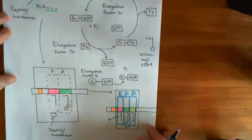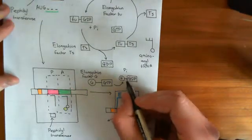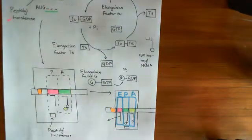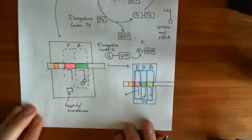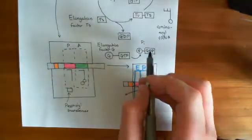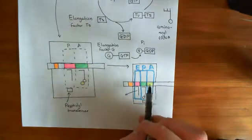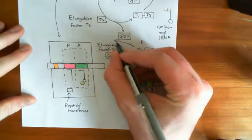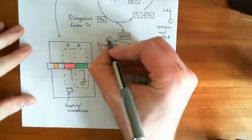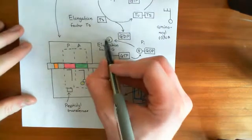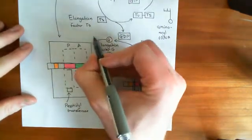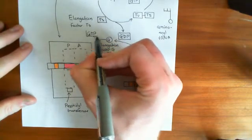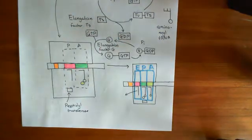Every time you move the ribosome, elongation factor G goes from having GTP bound to it to having GDP bound to it, and the energy released by that hydrolysis moves the ribosome along the mRNA. To regenerate it, you knock off that GDP molecule so it dissociates, giving a pure elongation factor G, and then you put another GTP back on there — reassembling elongation factor G with a guanosine triphosphate molecule on it.